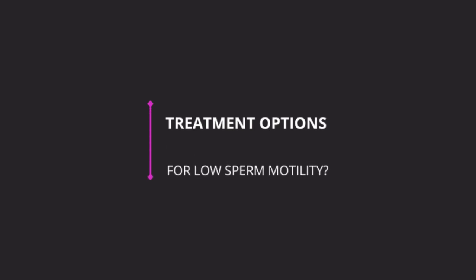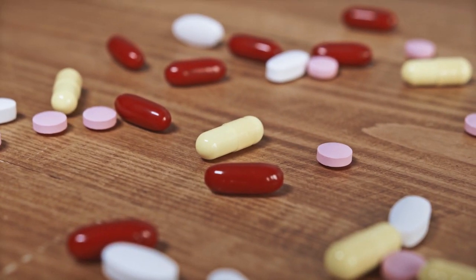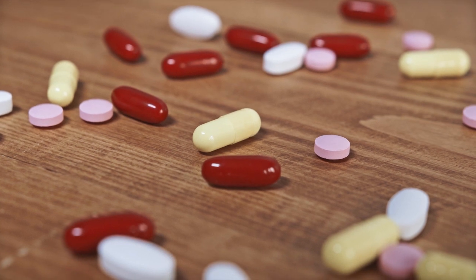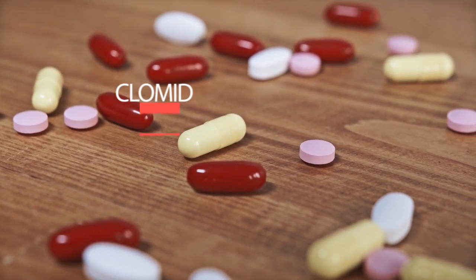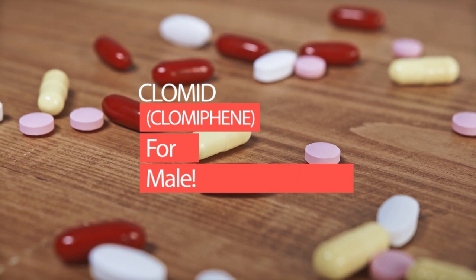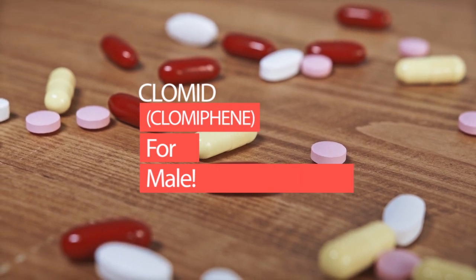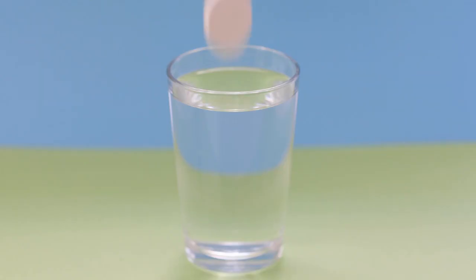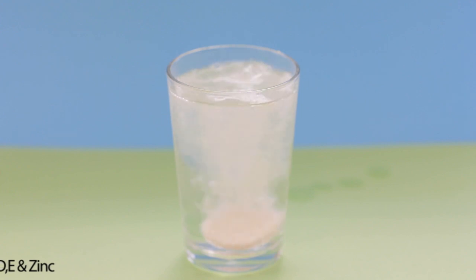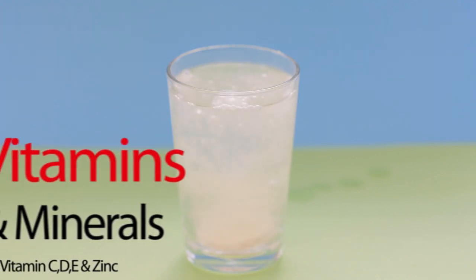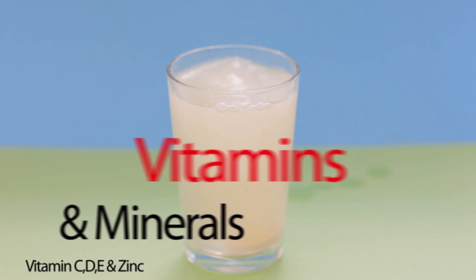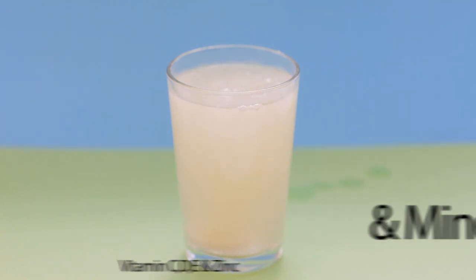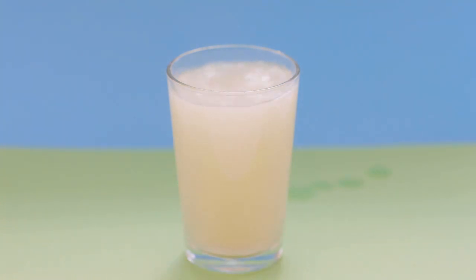So what are the treatment options for low sperm motility? If a couple is having trouble conceiving due to low sperm motility, depending upon the cause, certain medications can be given to improve sperm motility, such as Clomid or Clomiphene for the male, or supplementation of various combinations of vitamins and minerals. In some cases this can be effective; however, it's still not very clear as to whether these methods significantly improve pregnancy rates.